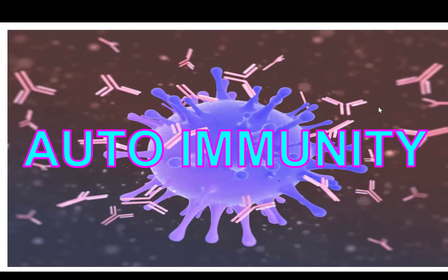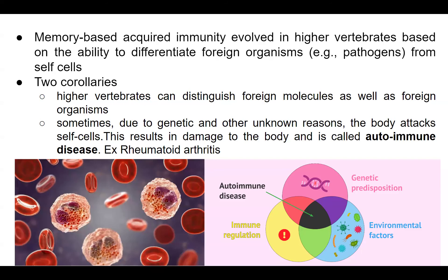Memory-based acquired immunity has evolved in higher vertebrates based on the ability to differentiate foreign organisms — that is, pathogens — from the body's own cells. If our body finds a foreign cell, it acts against it and kills it; antibodies are produced. There are two corollaries: first, higher vertebrates can distinguish foreign molecules and organisms. Second, sometimes due to genetic or other unknown reasons, the body attacks its own cells, unable to recognize them as self.